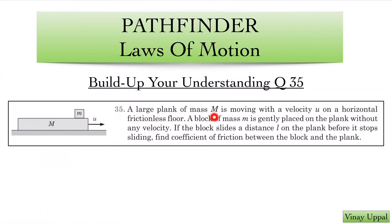A large plank of mass M is moving with velocity u on a horizontal frictionless floor. A block of mass m is gently placed on the plank without any velocity. So I have this small block placed on this plank which is already moving with some speed u.